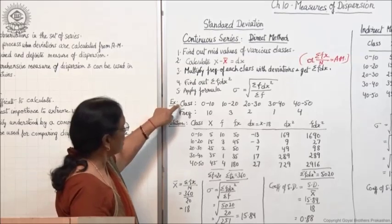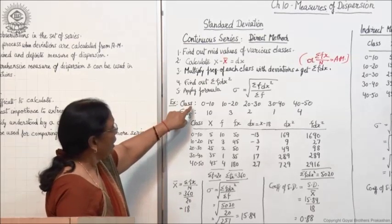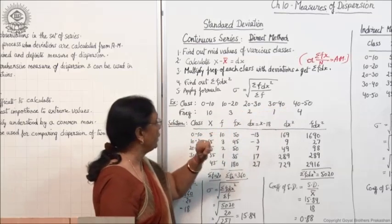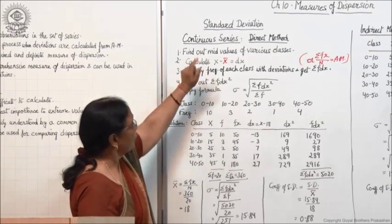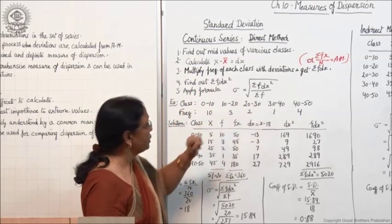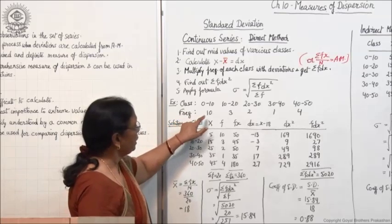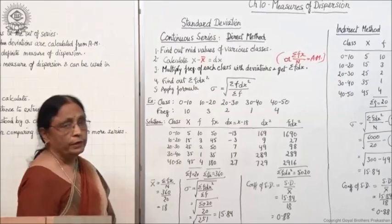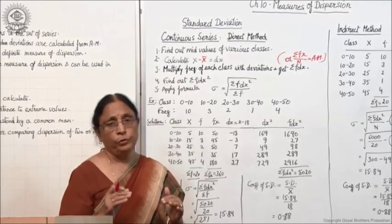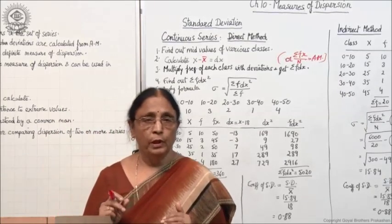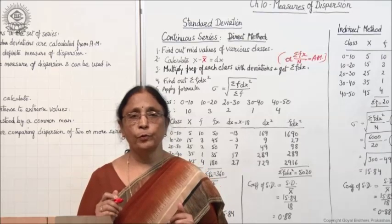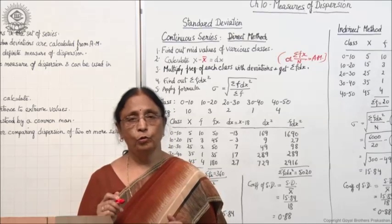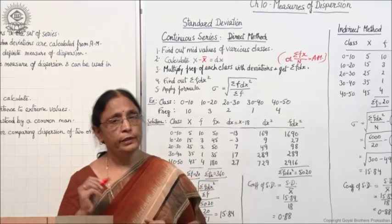For example here, class and frequency is given. The classes are 0 to 10, 10 to 20, 20 to 30, 30 to 40, and 40 to 50 — this is the case of continuous series. The frequencies are 10, 3, 2, 1, and 4. This is the data given to you, and on the basis of this data, you are supposed to calculate standard deviation and coefficient of standard deviation.